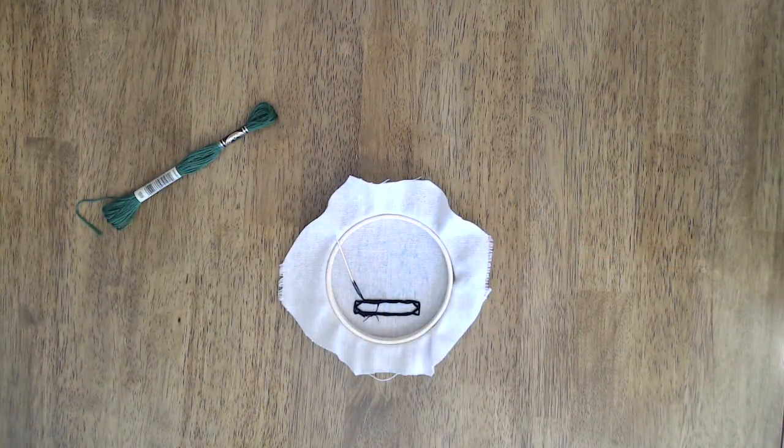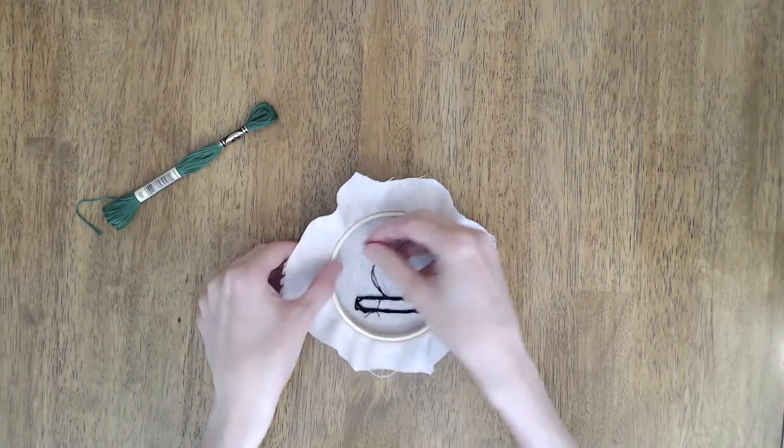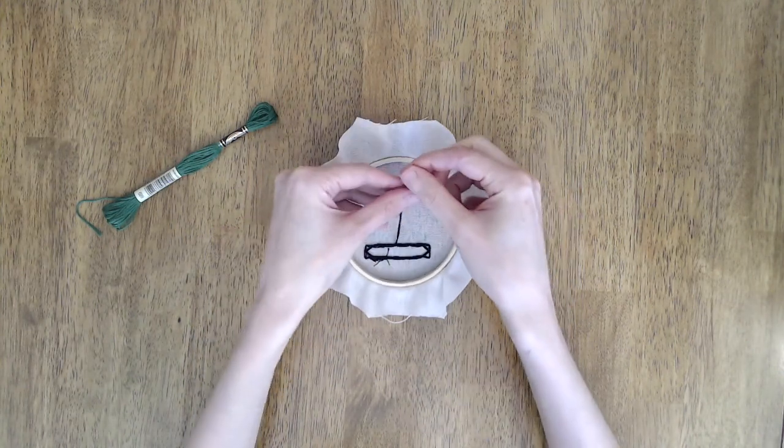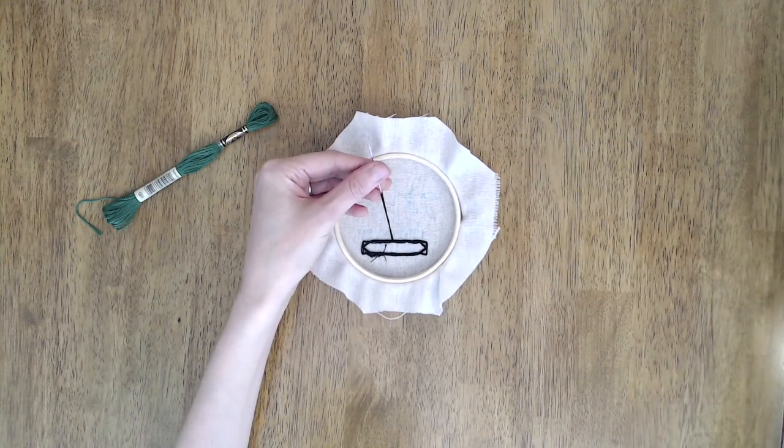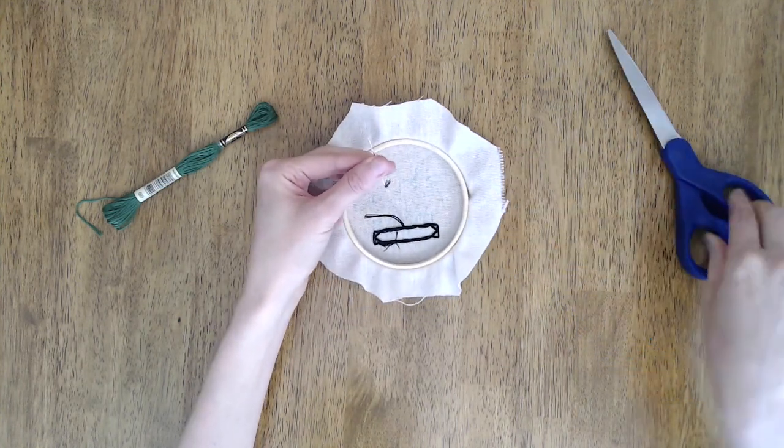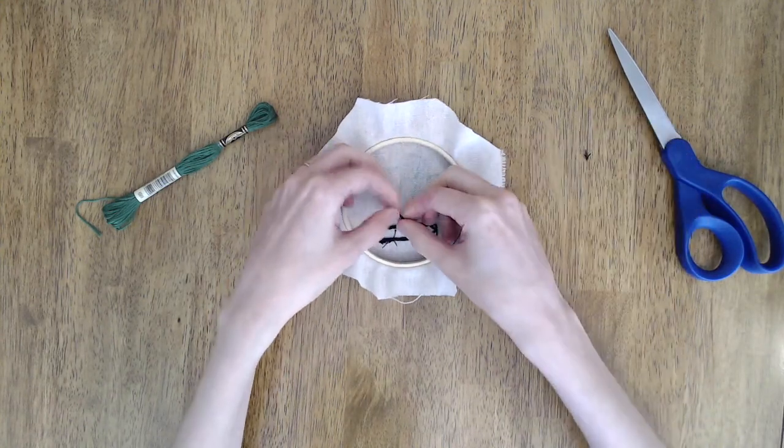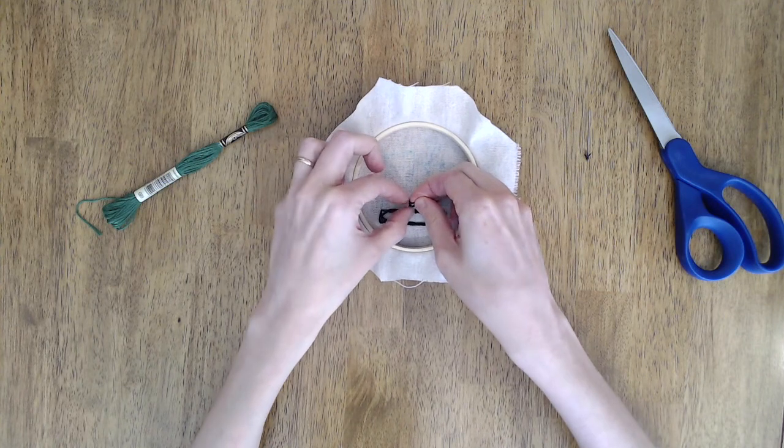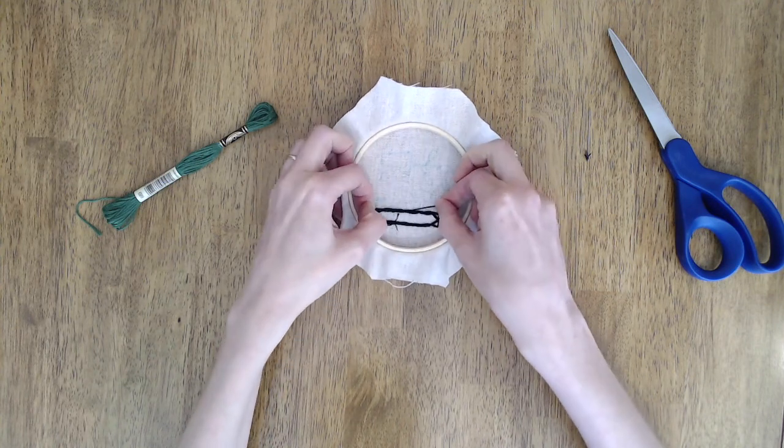Eventually you'll reach a point where your floss is too short like I have here, so you'll need to cut it off and tie it on the back side of your hoop. Just a basic double knot works well here. And once you've done that you can just re-thread the needle and keep going.